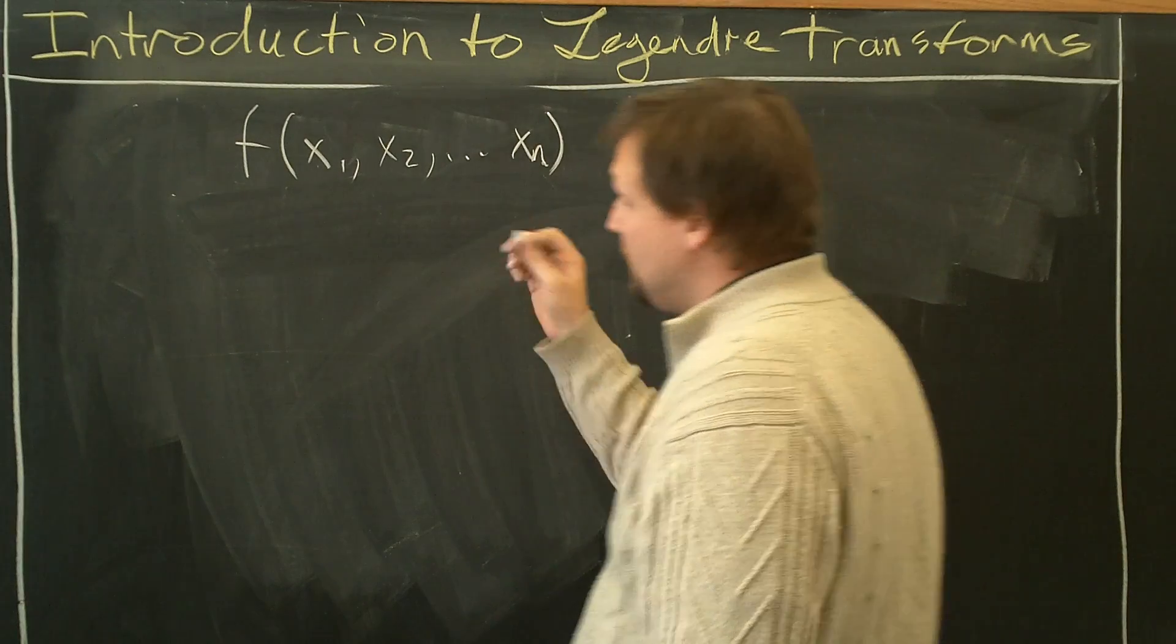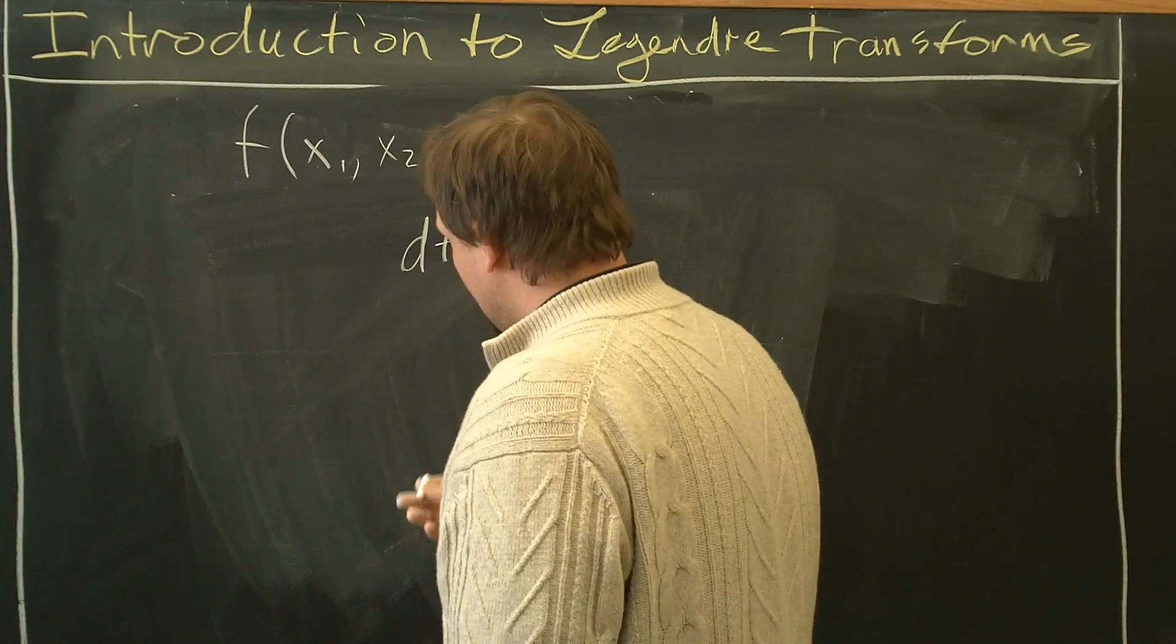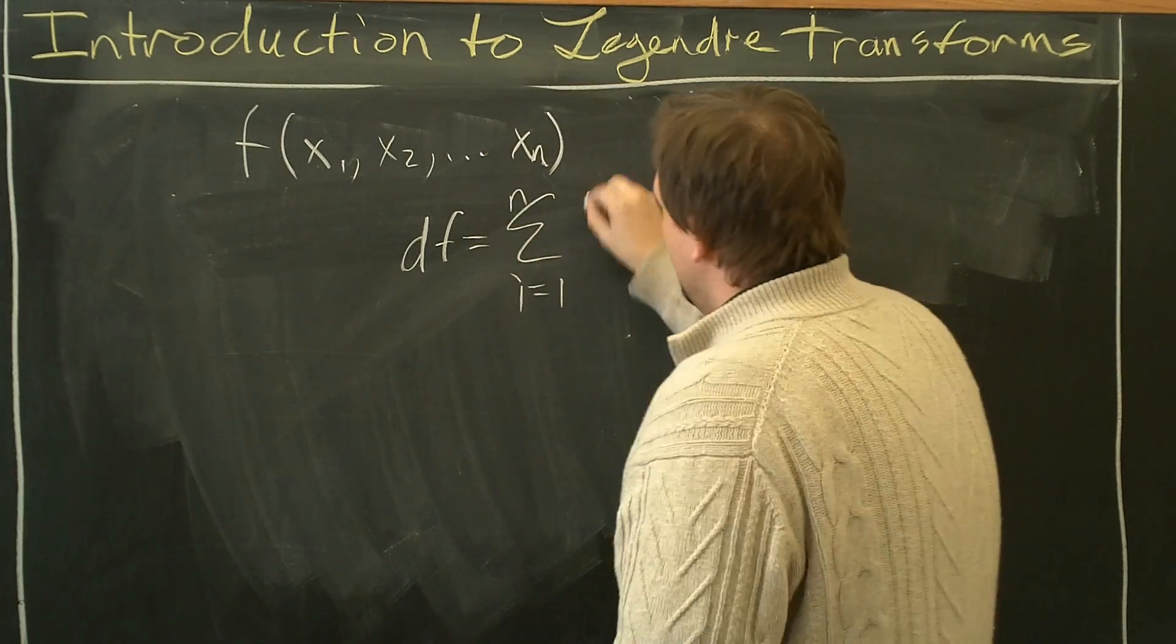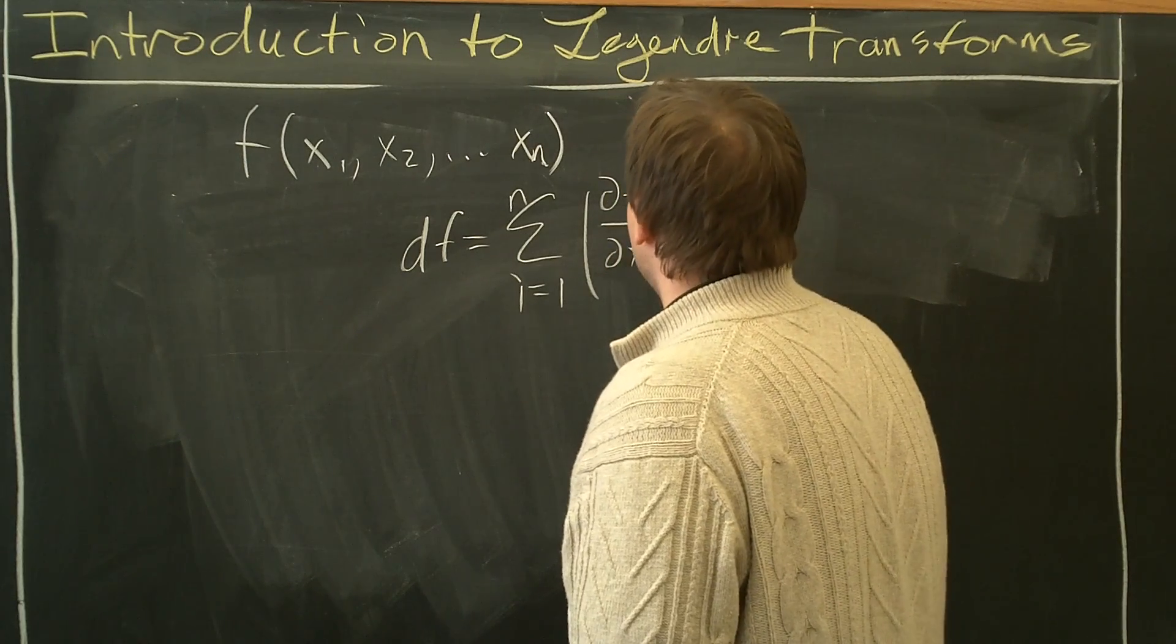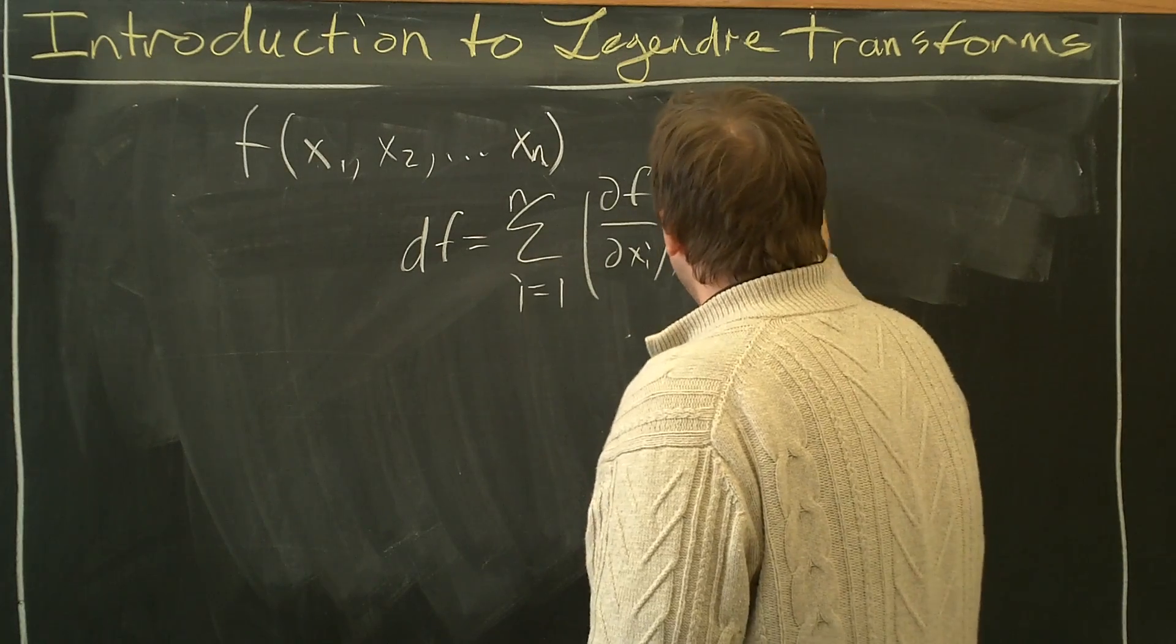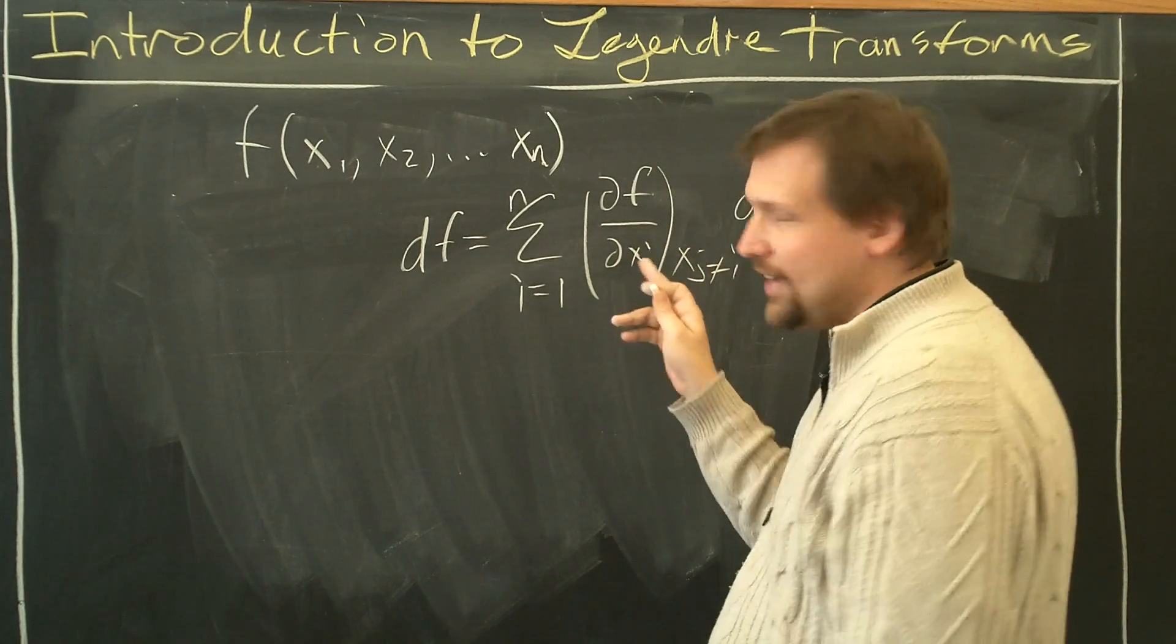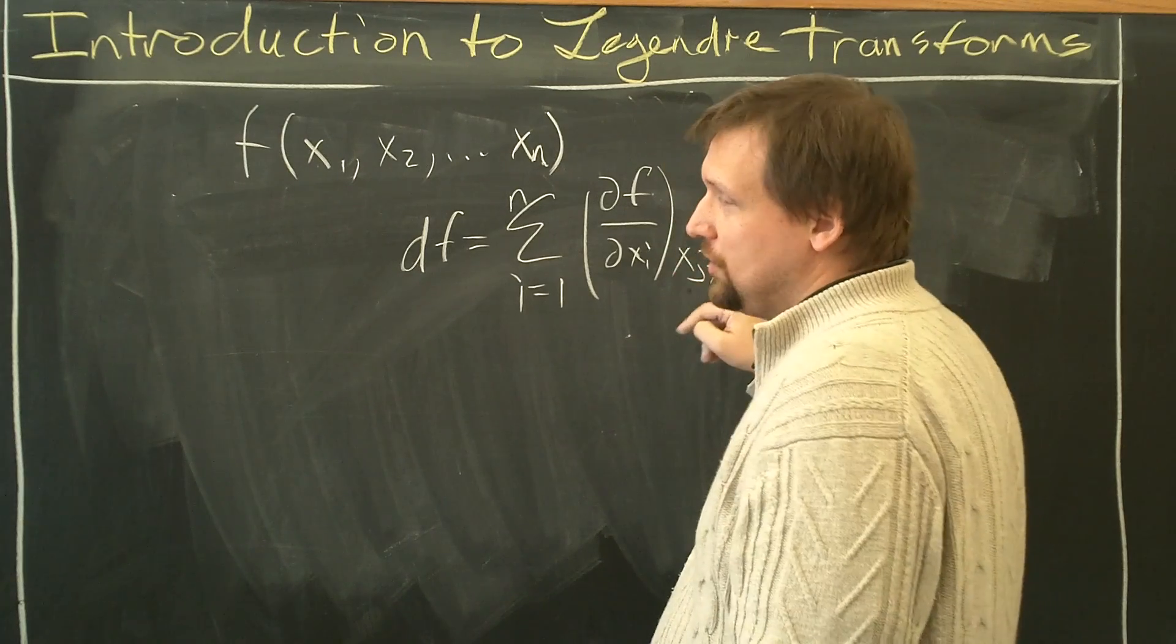First, let's just take the derivative of f and see what that gives us. So take the derivative of f, the multivariable function, you get the summation i equals 1 to n of partial f partial xi with xj not equal to i times dxi. This notation here means taking the derivative of f with all the xj not equal to i equal to a constant.